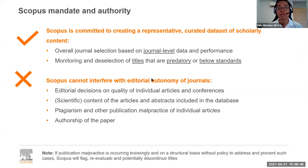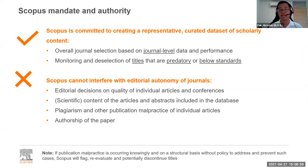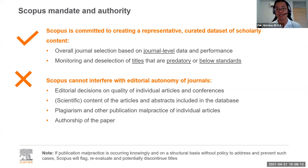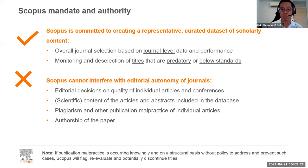Scopus is committed to creating a representative dataset of scholarly content and author profiles. Journal selection is based on journal-level data and performance, and we monitor and deselect titles which are predatory or below standards. I'm aware that sometimes when you publish in a journal indexed on Scopus, you may find that journal is no longer indexed. We update our title list on a monthly basis to keep you up to date on which titles remain indexed.